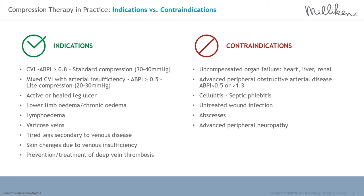Contraindications for the use of compression include uncompensated organ failure — whether heart, liver or renal; advanced peripheral obstructive arterial disease where an ABPI is less than 0.5 or greater than 1.3; cellulitis or septic phlebitis; untreated wound; and advanced peripheral neuropathy. Compression should not be used in these cases.